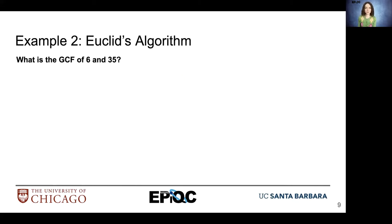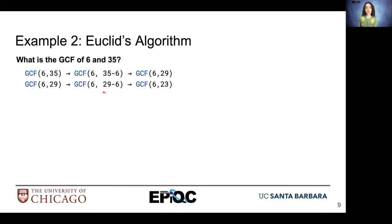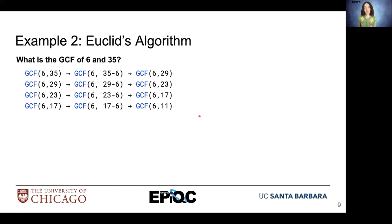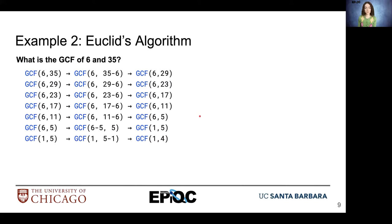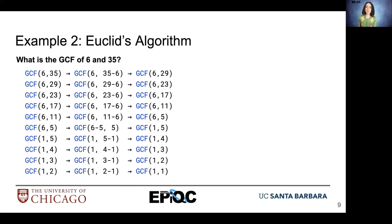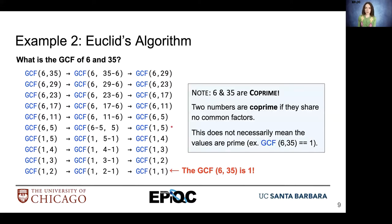Let's do another example. What is the greatest common factor of 6 and 35? First, we determine the largest number — 35 — and subtract the smaller. So 35 minus 6 gives us 29. 29 minus 6 gives us 23. 23 minus 6 gives us 17. 17 minus 6 gives us 11. We continue this routine until we reach two equal values. The greatest common factor of 6 and 35 is 1. Since 6 and 35 share no other factor besides 1, that means the two values are co-prime. This doesn't necessarily mean that the values are prime themselves.